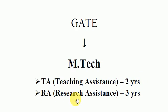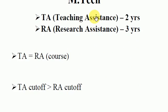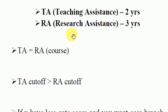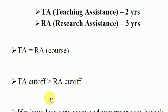The second type is RA, Research Assistant, with a duration of three years. The course content for both TA and RA is the same — the only difference is duration. Since you can complete MTech in two years with TA, people prefer TA, so TA cutoff is higher than RA cutoff.